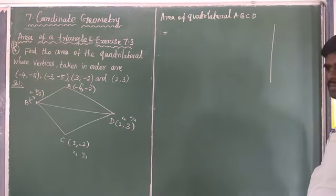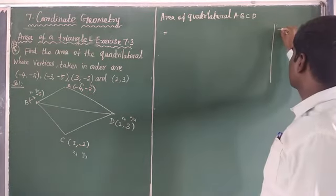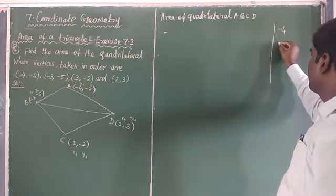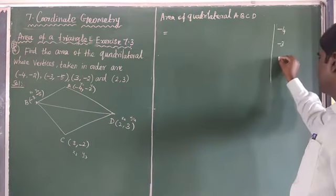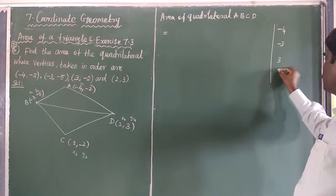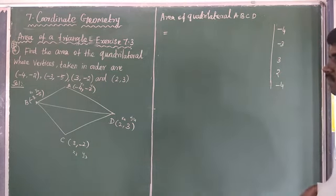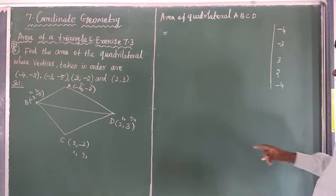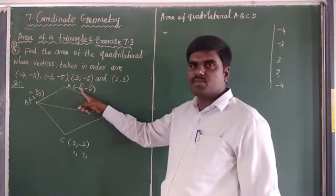Find out the survey method. Here what's x1? Minus 4. x2 is minus 3. Next x3 is 3. x4 is 2. Again x1 value minus 4. You can start with x1 again.